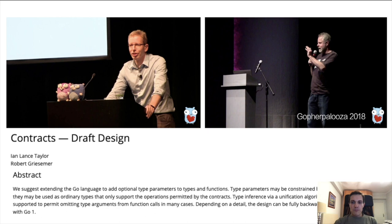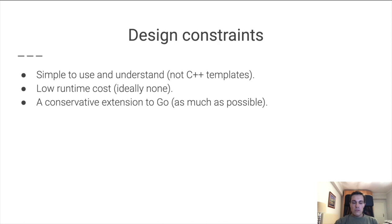By this time, the Go team had already a draft design for generics based on a notion of contracts, which are a feature absent from Go. Based on discussions with the Go team and the original contract proposal, we extracted the main design constraints for generics, which essentially would have to be simple to use and understand, not as complicated as C++ templates, have low runtime cost, ideally none, and be a conservative extension to Go as much as possible.